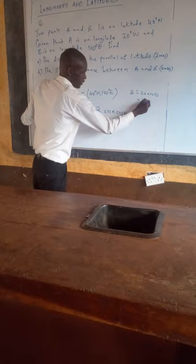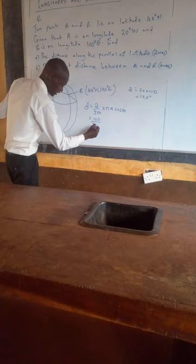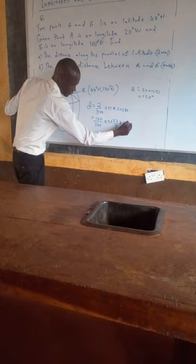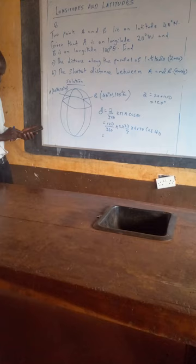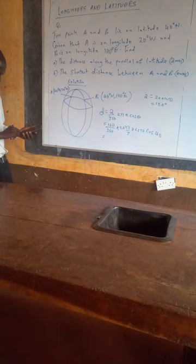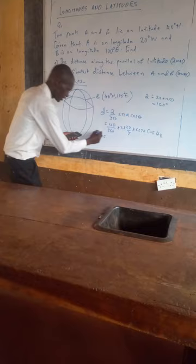Substituting into the formula: distance = (120 / 360) × 2 × (22/7) × 6370 × cos 40°. Evaluating this on the calculator gives us 10,224 kilometers. This is the distance along the parallel of latitude.